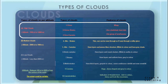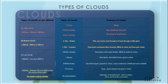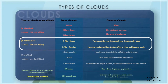Cirrus clouds are wispy. Cirrostratus look like bedsheets with a hollow. Cirrocumulus look like groups of small waves. Medium clouds have an altitude ranging from 2,000 meters to 7,000 meters. The types of medium clouds are altostratus and altocumulus. Altostratus clouds are thin — the sun can be seen through them as if seen through a milky glass. Altocumulus clouds have layers and a wave-like structure; they are white in color with a gray shade.